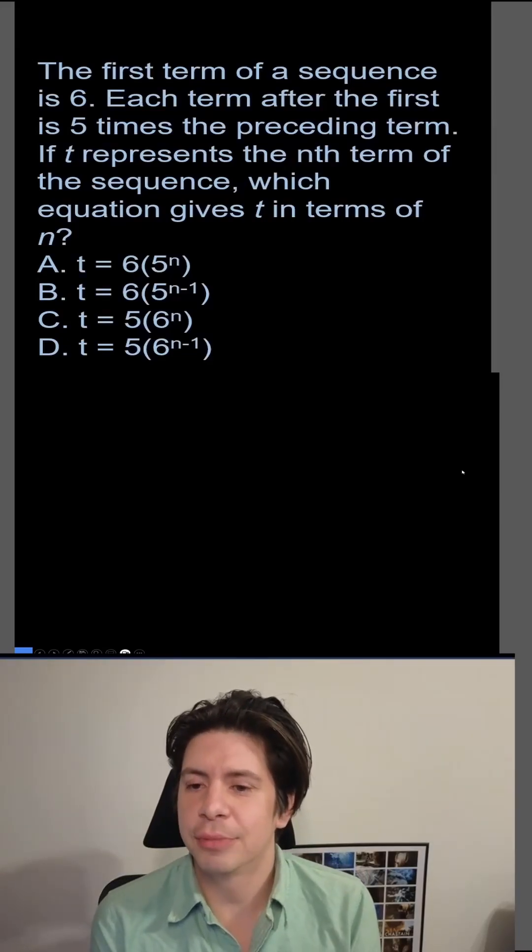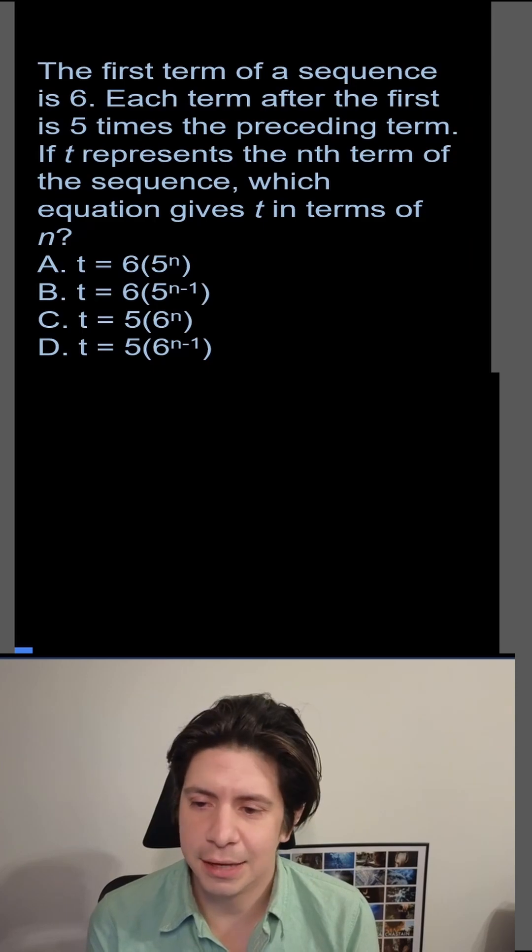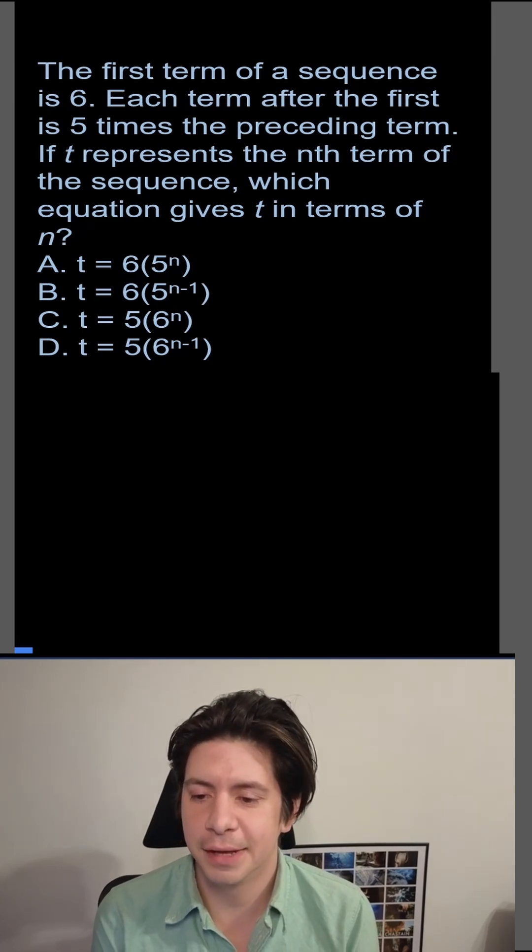First term of a sequence is 6. Each term after the first is 5 times the preceding term. If t represents the nth term of the sequence, which equation gives t in terms of n?